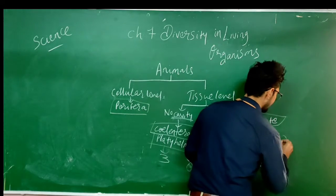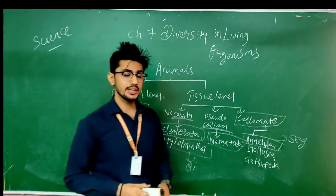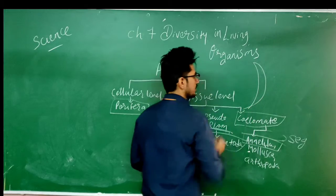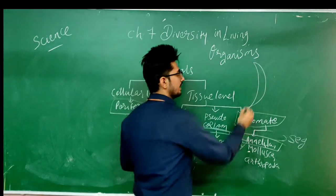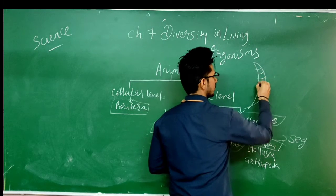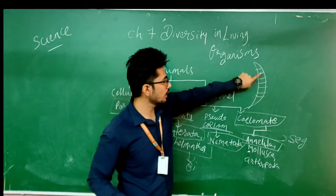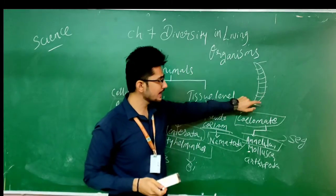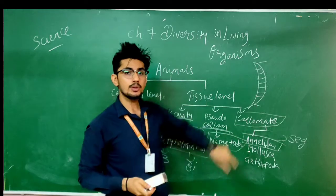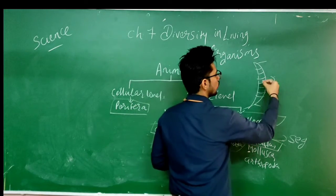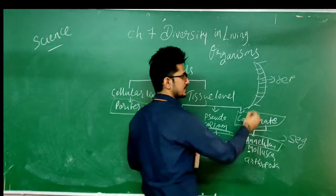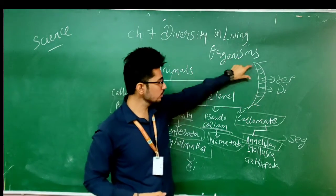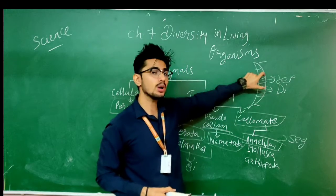Another thing to note is that Annelida are segmented in their body. For example, an earthworm has segments. These segments run through the body from head to tail. Because of these segments present in their body, they can fit the organs in a particular way. For example, they can say that in my first four segments, reproductive organs are there; in my next two segments, I am having digestive organs. In this way, they have proper segments in their body, and according to that they are able to fit all the things properly inside them.